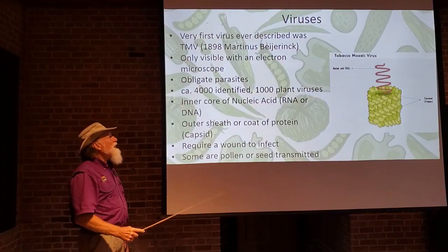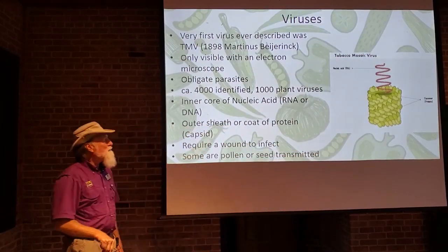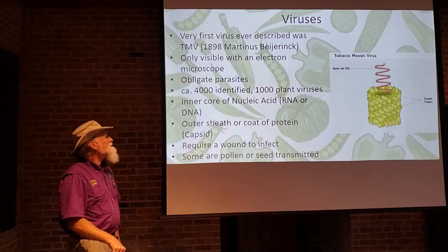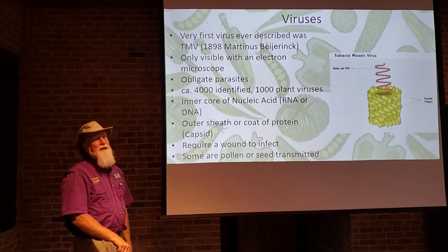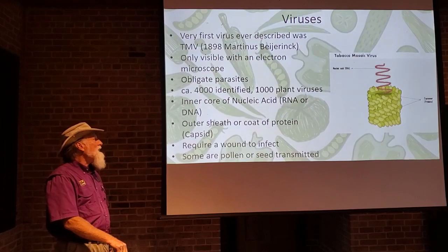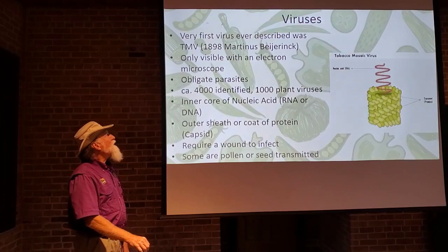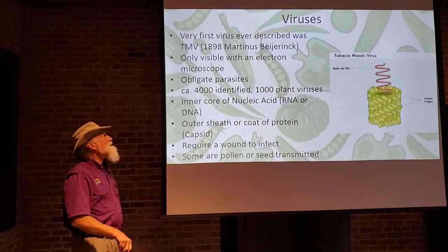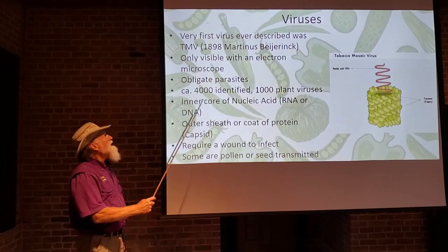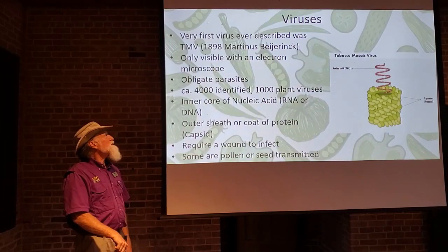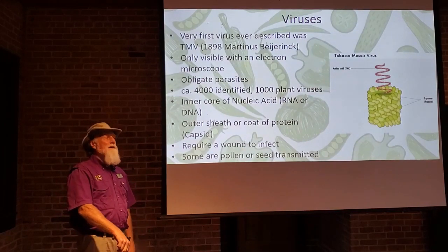What is a virus? A virus is essentially a nucleic acid core surrounded by a protein outer layer called the capsid. This outer coat protein protects the nucleic acid, which can be either RNA or DNA. The very first virus ever described was the tobacco mosaic virus, described in 1898 — the first virus of any kind ever described. Plant viruses were the first ones examined and described, and after that all other viruses followed.